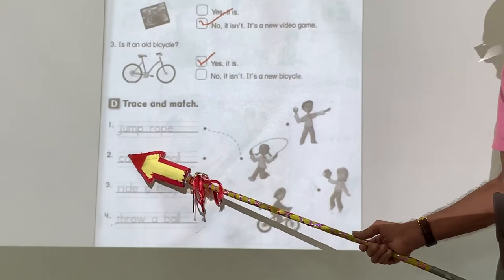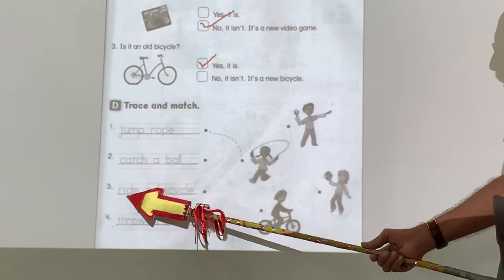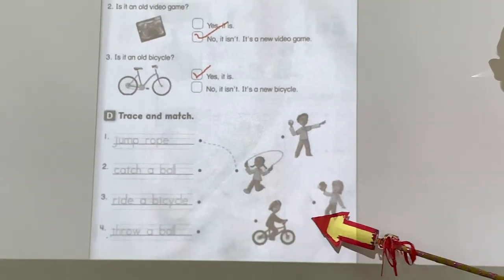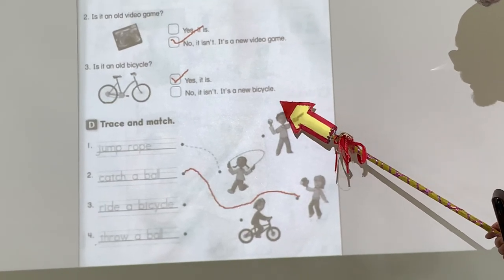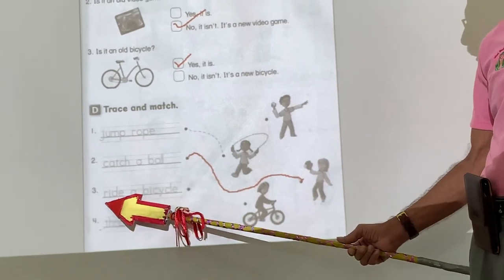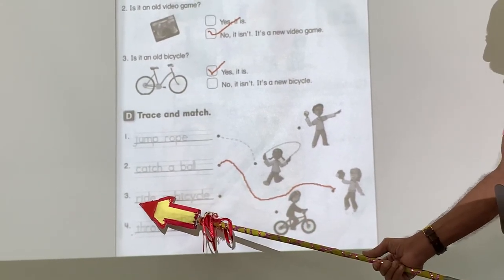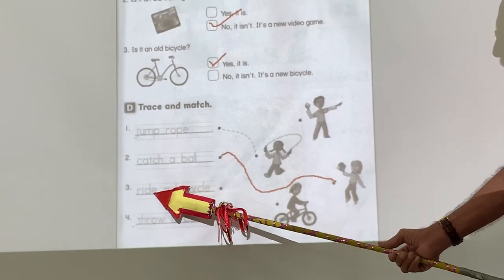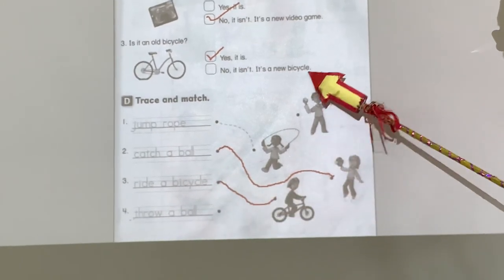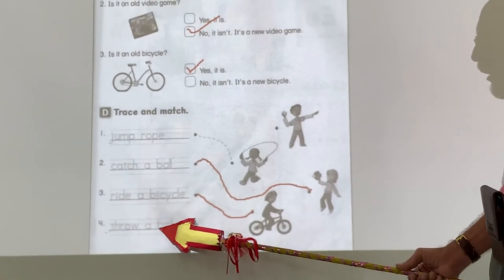Now, there's two things you can do with a ball. You can catch it or you can throw it. Which one of these pictures here is catch a ball? Catch the ball. This is catching the ball. Number three. Ride a bicycle. R-I-D-E. Ride a bicycle. Which one of these is riding a bicycle? There you go. That's the best bicycle. And number four.